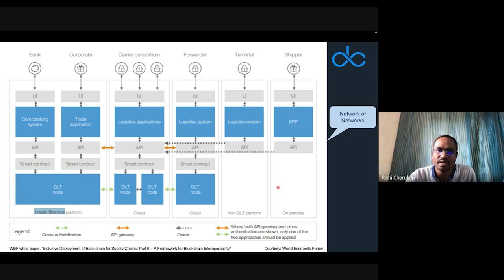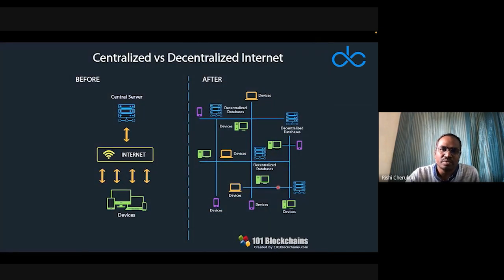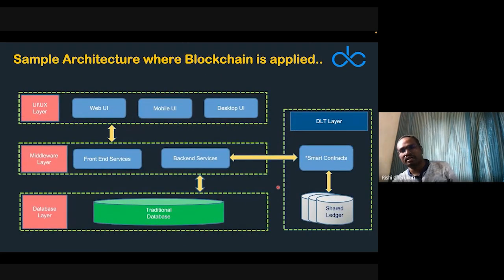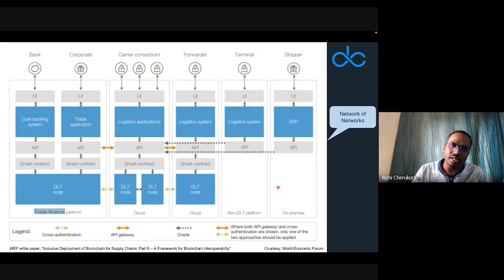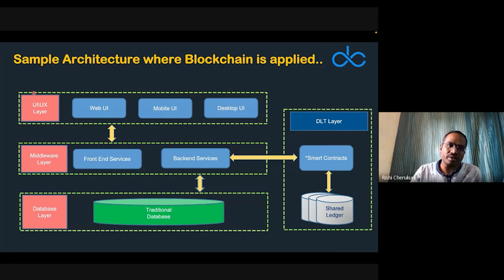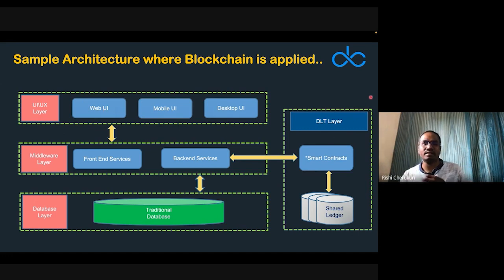That's the difference between centralized and decentralized internet. A sample architecture involves a distributed ledger, a smart contract, an API, a logistics application, and a UI — all forming layers: UI layer, middleware layer, database layer, and shared distributed ledger technology, all coming together to provide what we actually want to do.